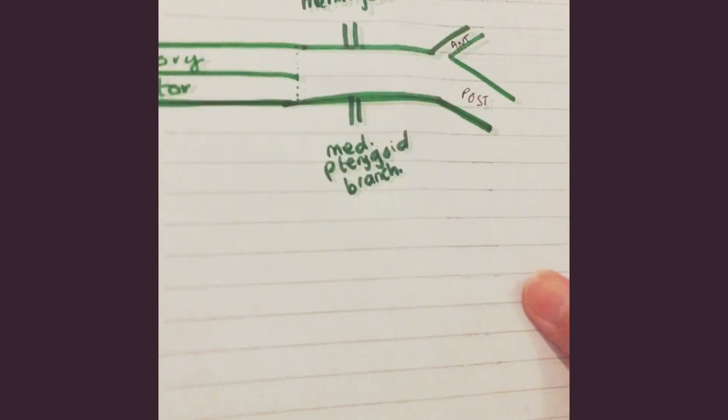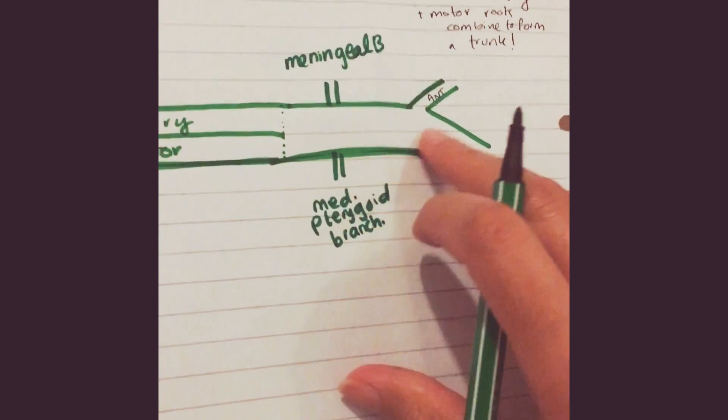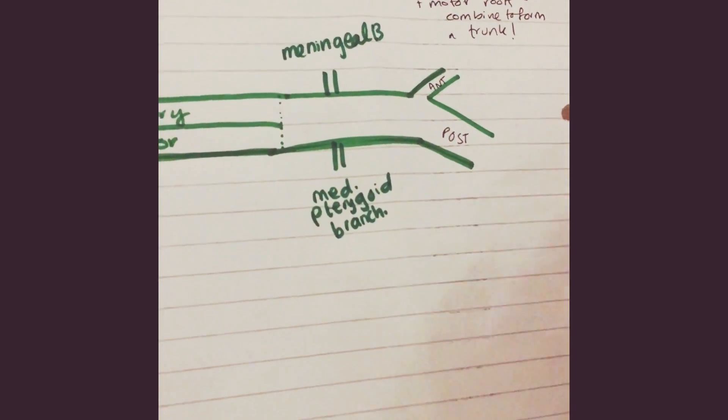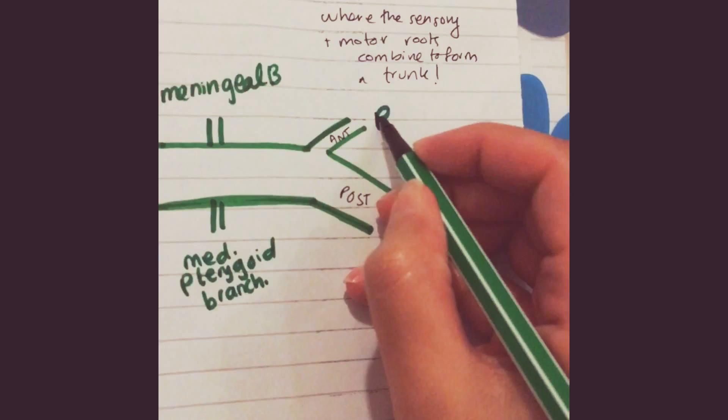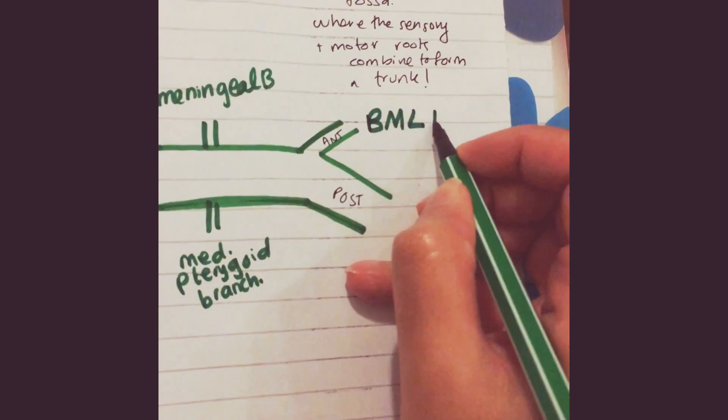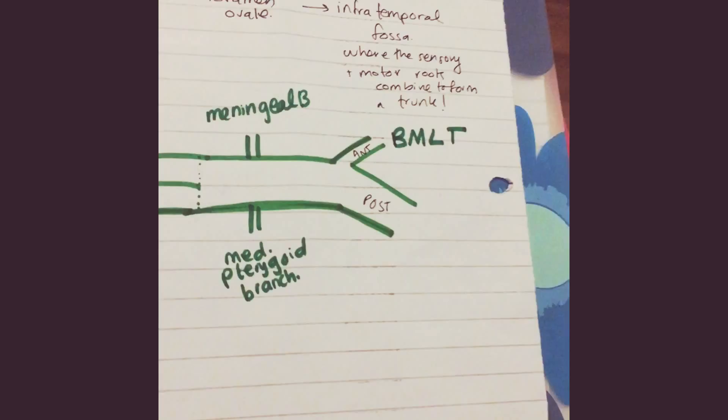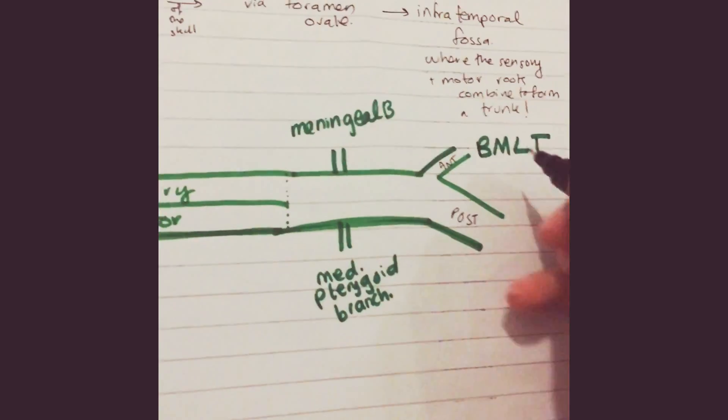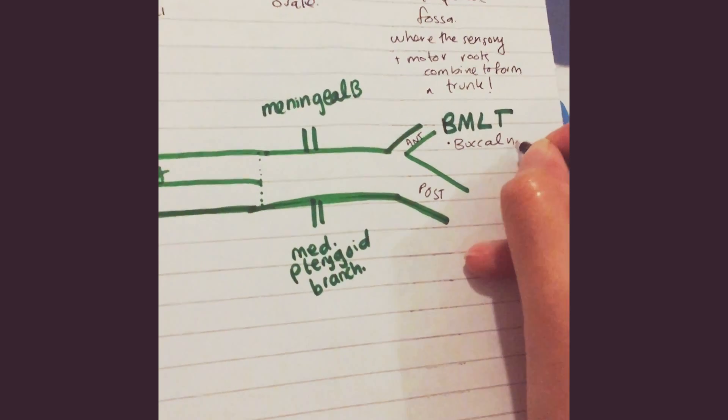Now the fun bit: the anterior portion gives off a few branches which we will learn by this mnemonic: BMLT. B is your buccal nerve.